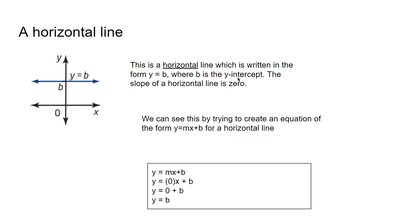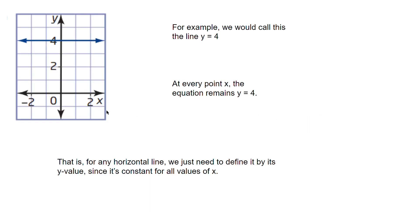A horizontal line has a slope of 0. We write this in the form y equals b, not y equals mx plus b, because m is 0 and that term just disappears. So we identify this line by its y-intercept. For example, we would call this line y equals 4, because it passes through y equals 4. At every point x, the equation remains constant at y equals 4 — it could be any x value, but it'll always be y equals 4.